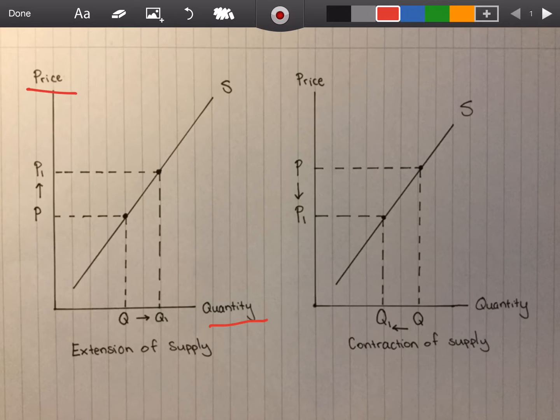Upward sloping supply curve labeled S. Again what I mentioned before, labeling P and Q for your initial point, your initial price and quantity, and then you're going to take that across to the supply curve.